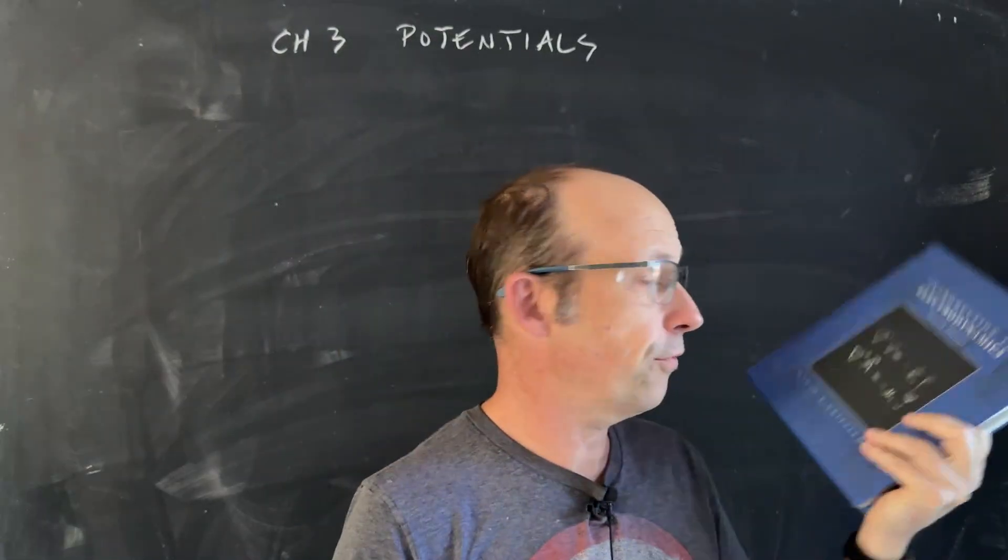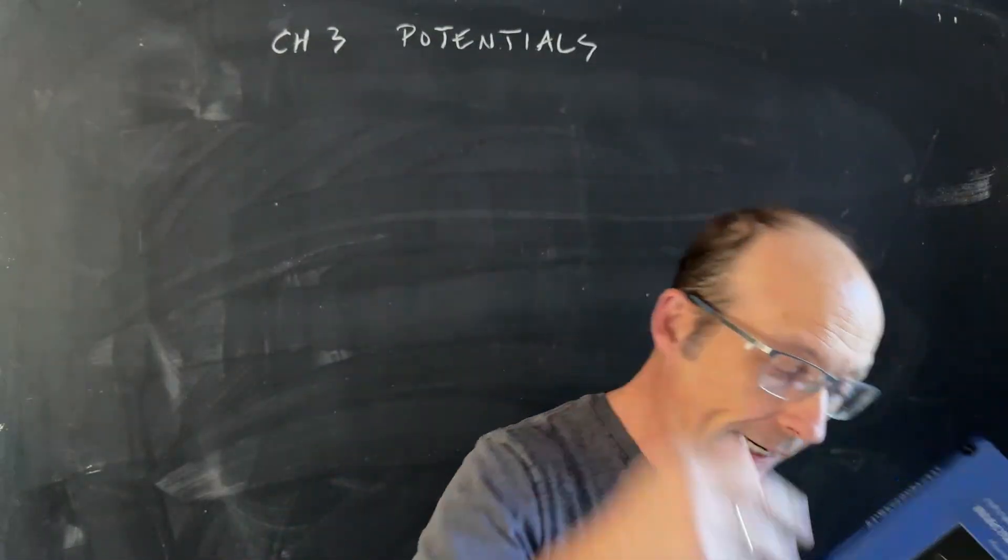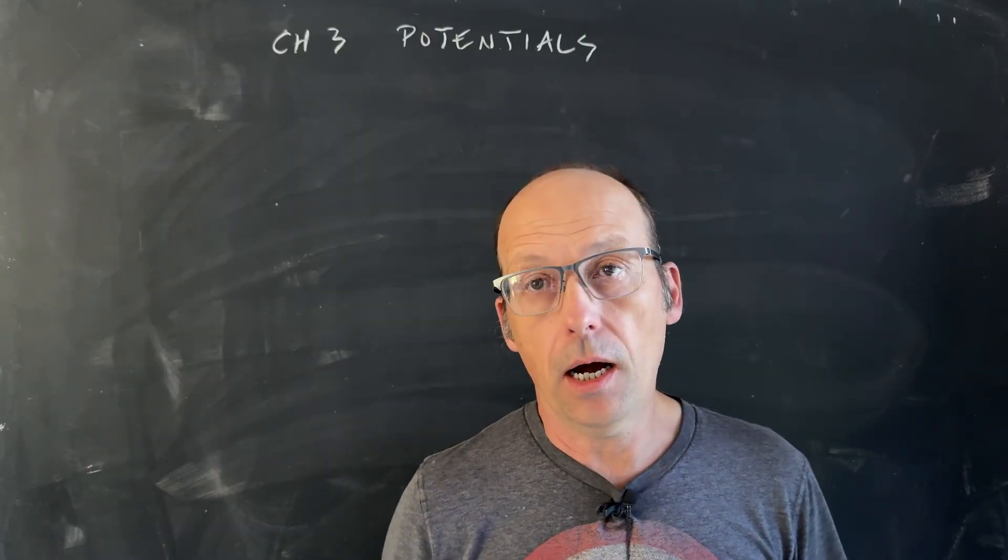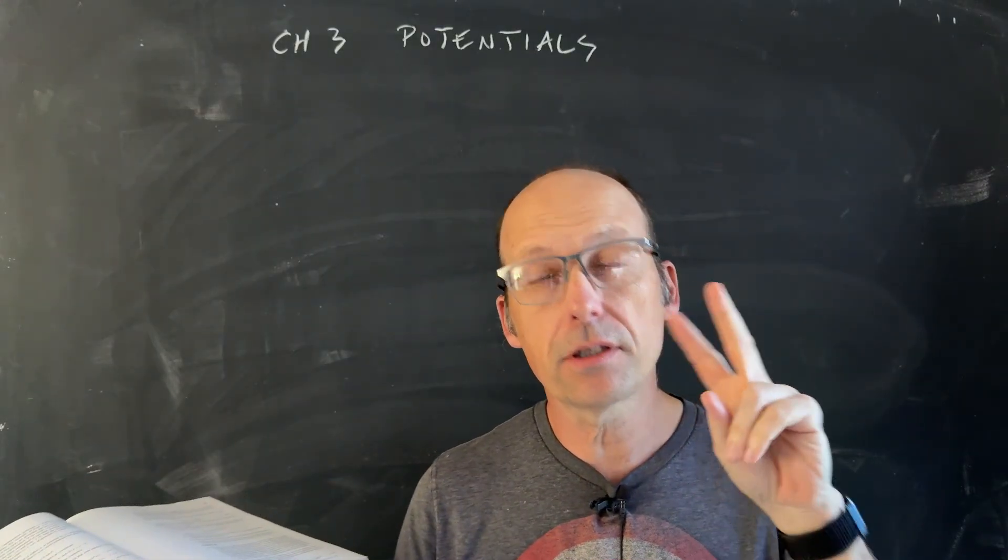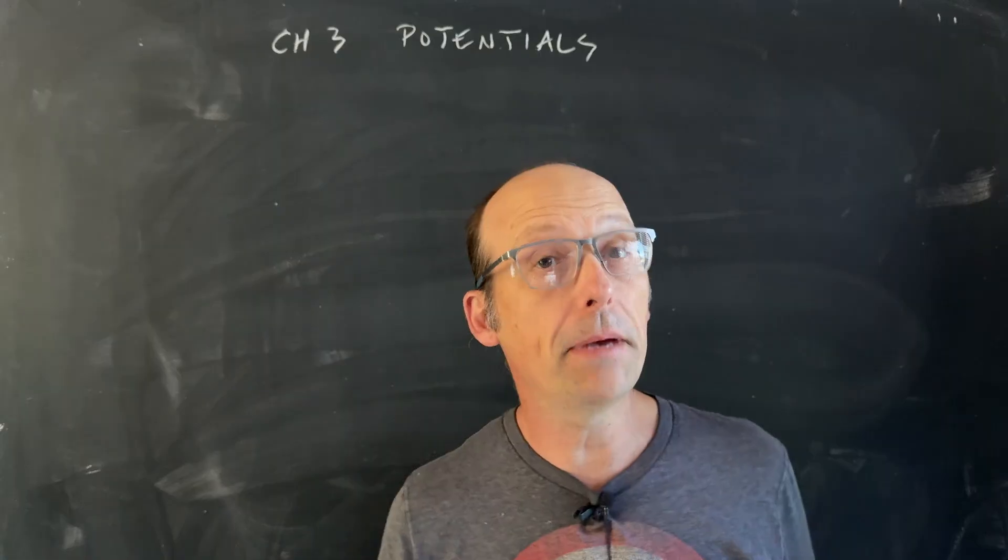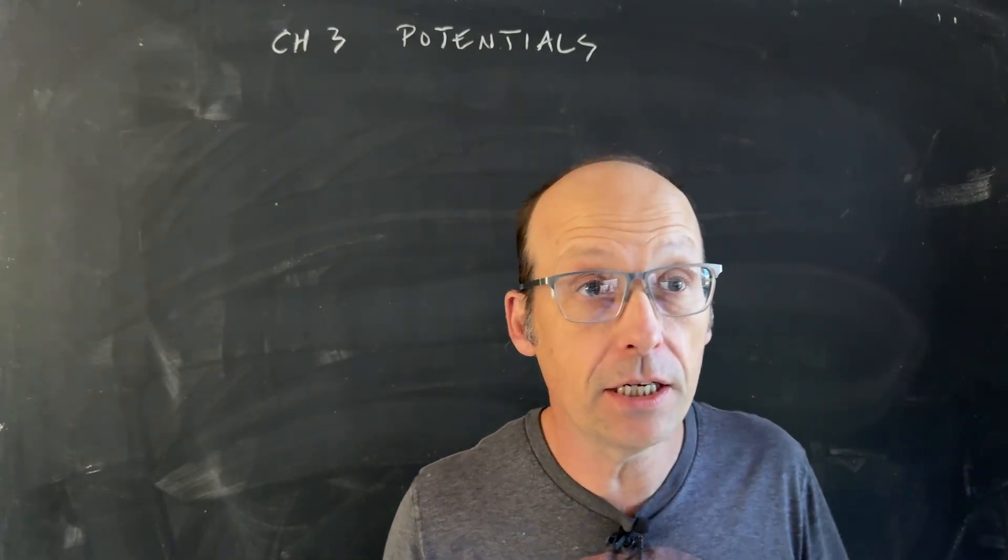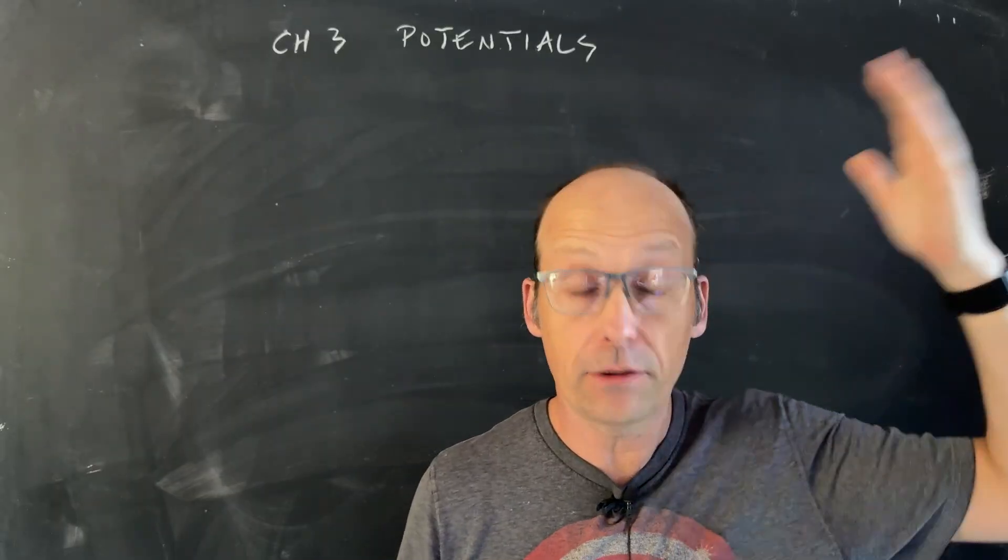Working through chapter summaries for Griffiths, we're on chapter three now. This chapter has a lot in there, but really there's two big ideas. Number one, solving the Laplace equation, finding the potential with boundary values.